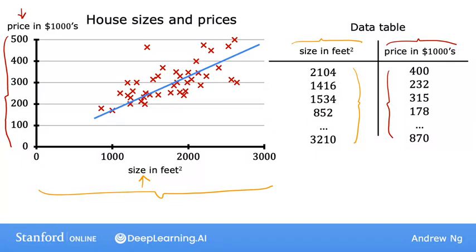Each cross corresponds to one row of the table. For example, the first row of the table is a house with size 2,104 square feet, and this house sold for $400,000. So this first row of the table is plotted as this data point over here.